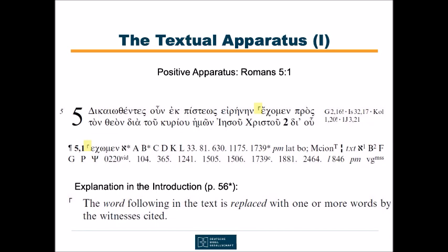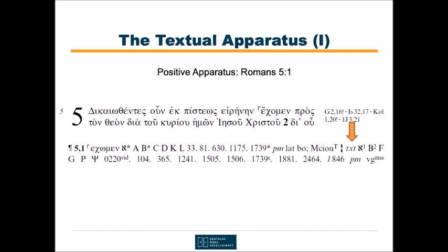The word following in the text is replaced with one or more words by the witnesses cited. The Nestle-Aland always gives the alternative reading or readings at the beginning of the apparatus unit. The wording of the reading is followed by the list of witnesses in its support. The witnesses that support the text reading can be found at the end of the apparatus unit in case of a positive apparatus. Instead of repeating the entire lemma, you will only find the abbreviation TXT at the beginning of the list. It stands for Textus (Latin) or Text (English). So this apparatus unit is pretty easy to understand.